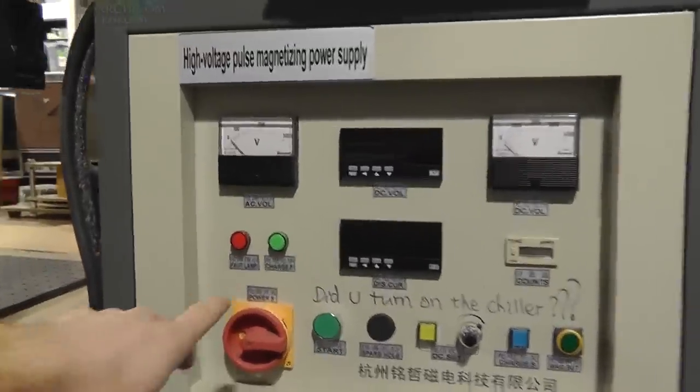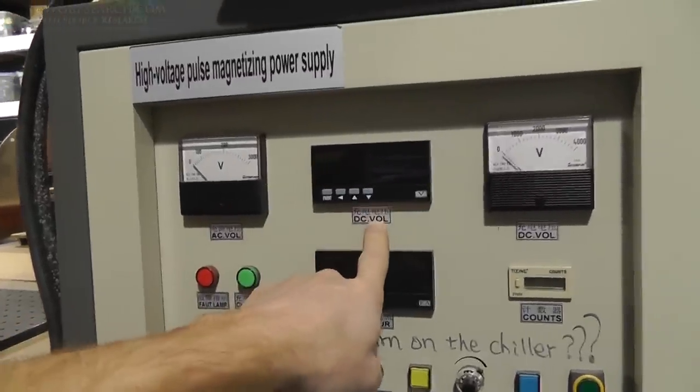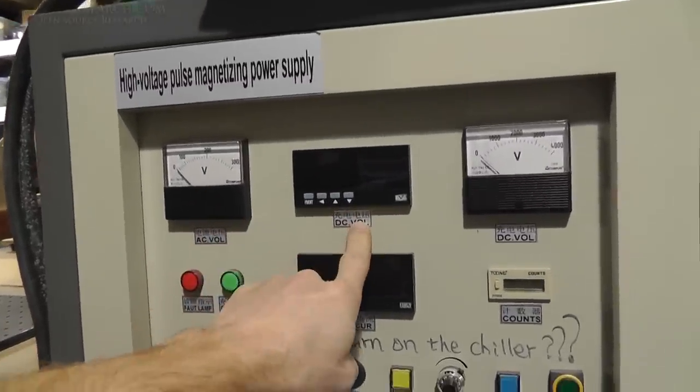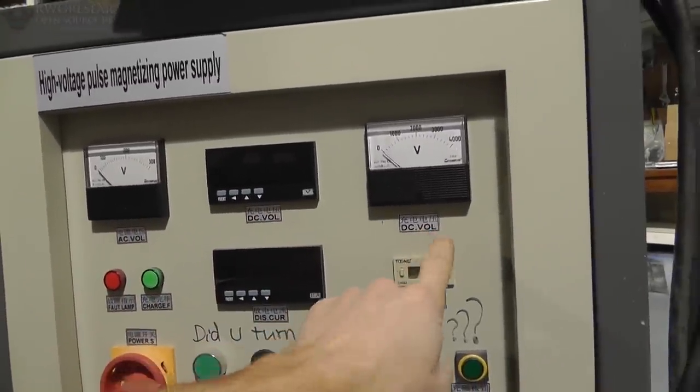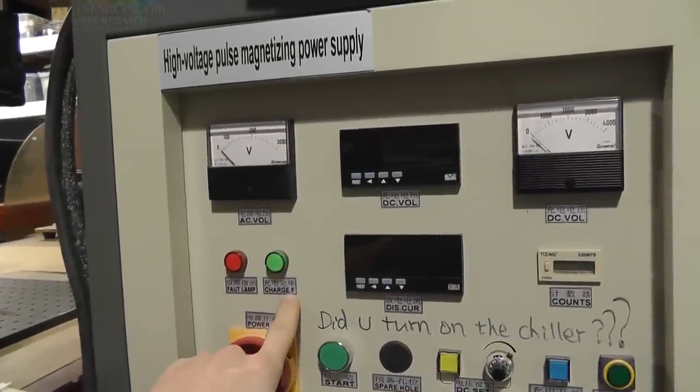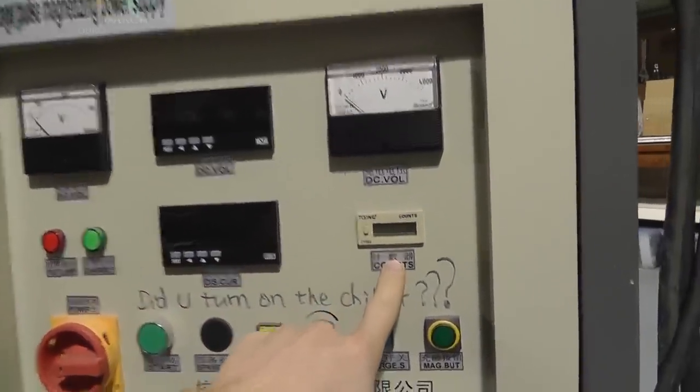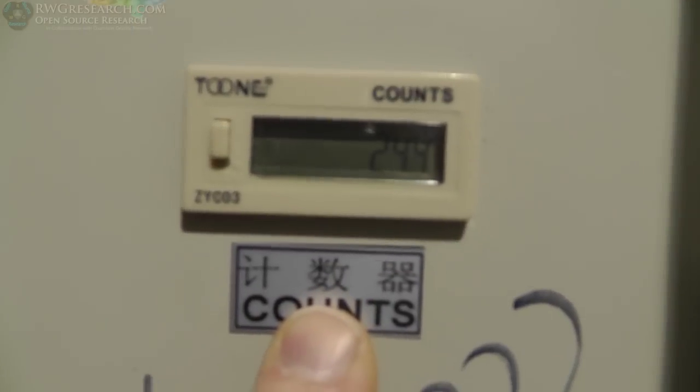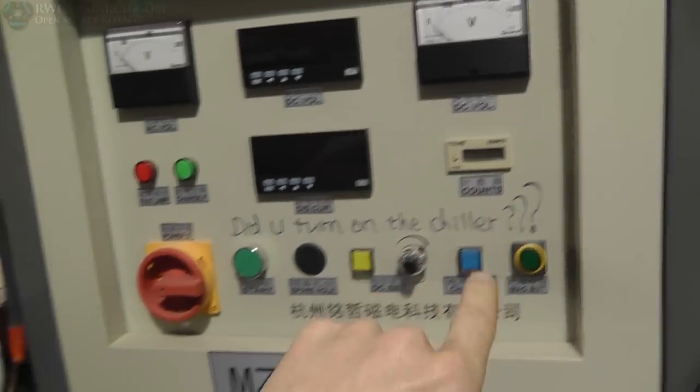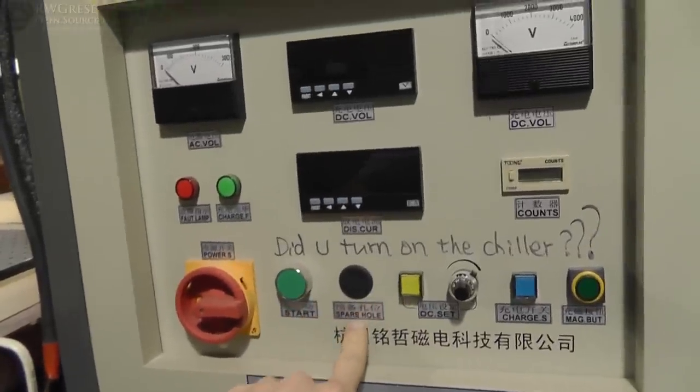So let's see, here we've got voltage, AC voltage, DC voltage, DC voltage, fault lamp, charge full light, discharge current, how many times this thing has been fired. In case you're interested, 244. We're about to make that a lot more. Start button, spare hole for added stuff.